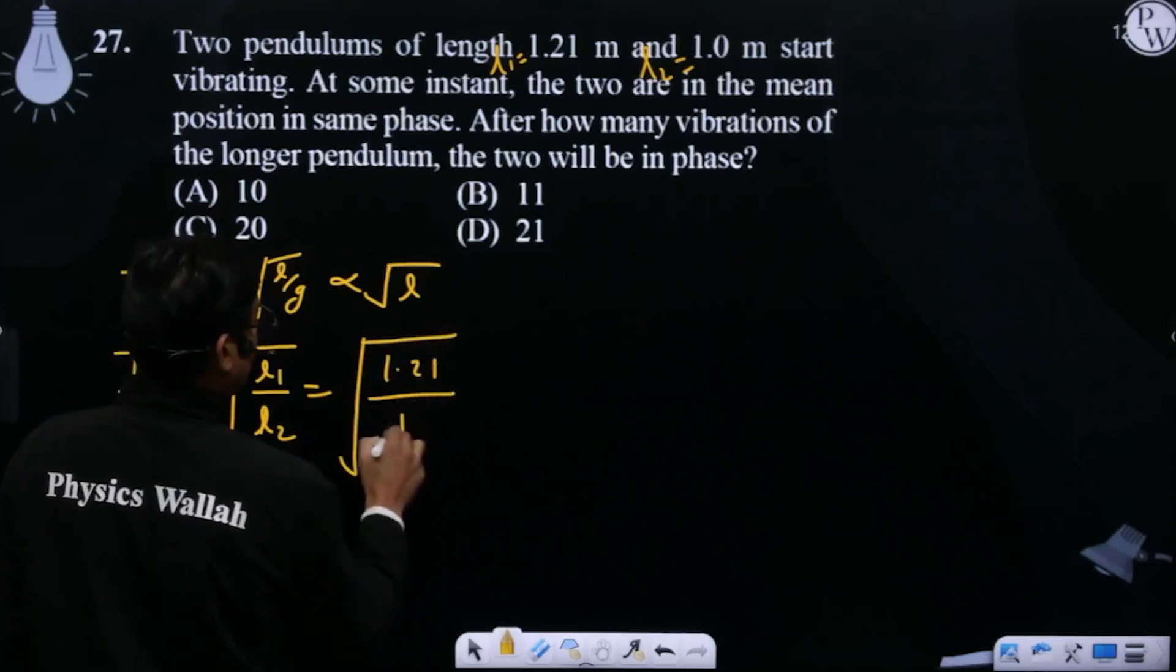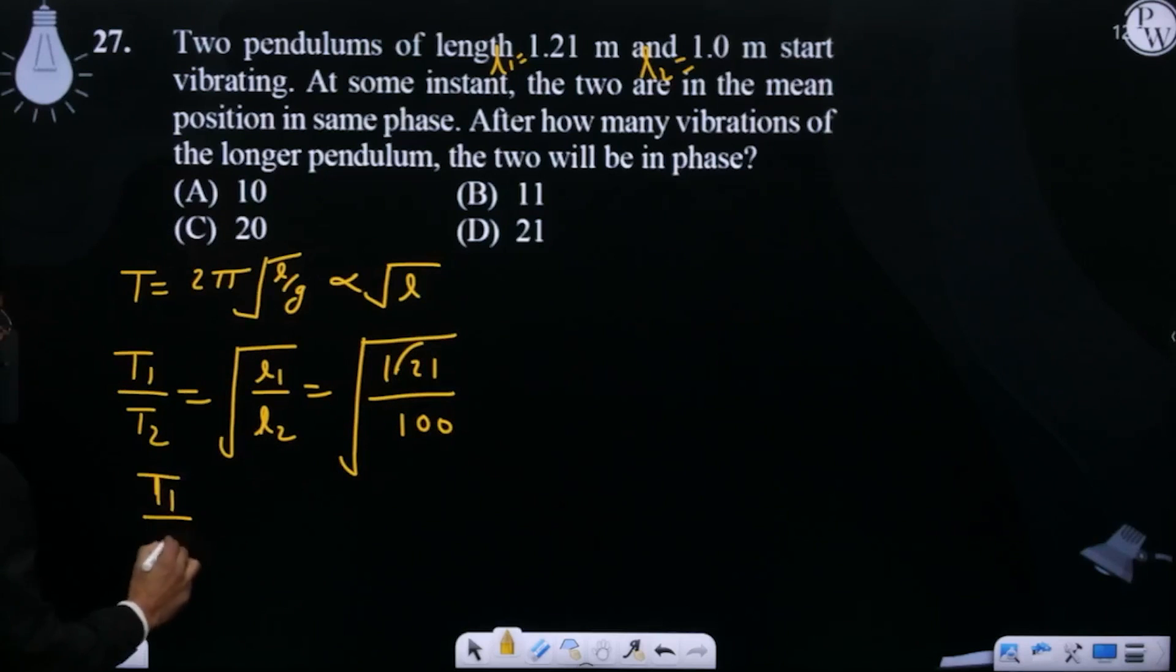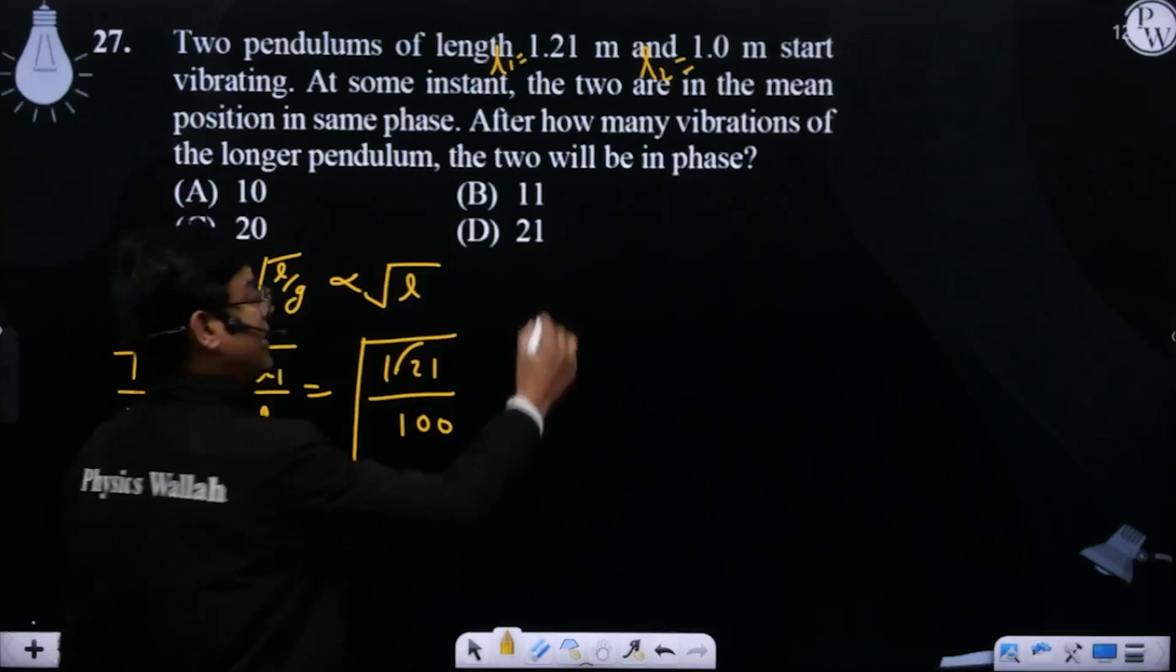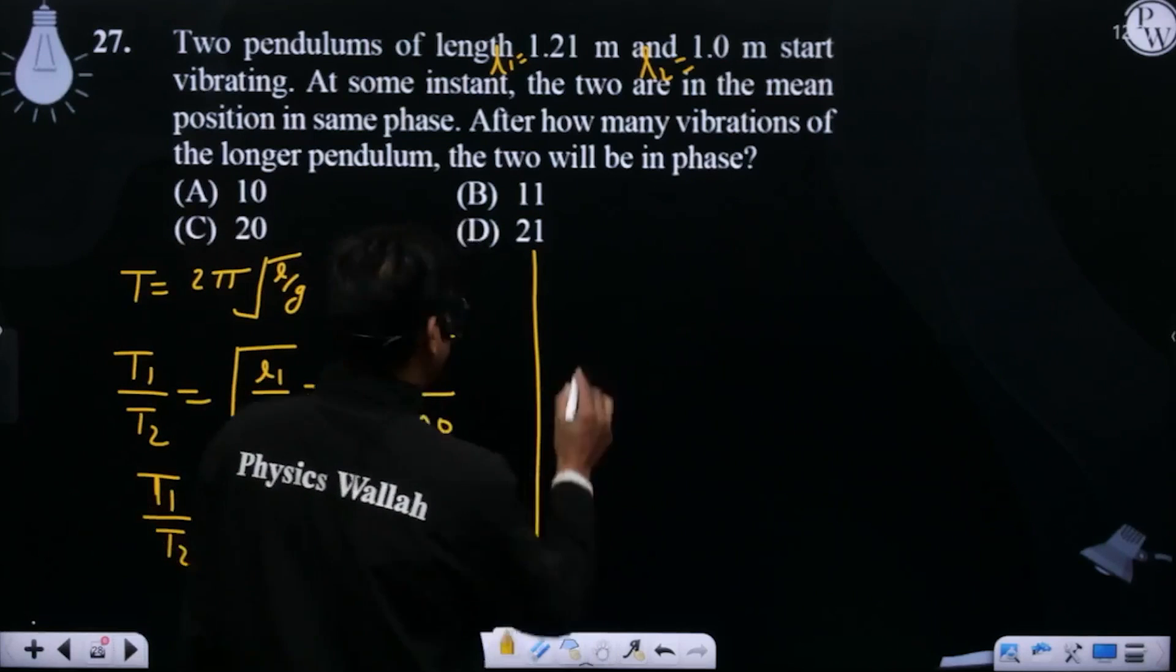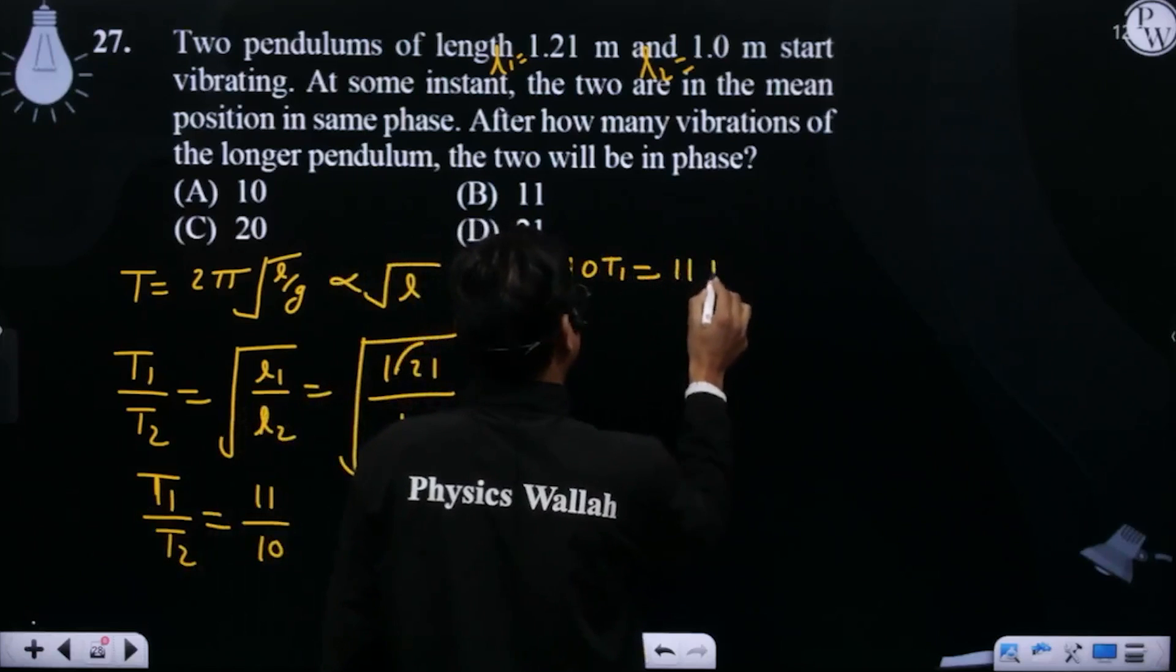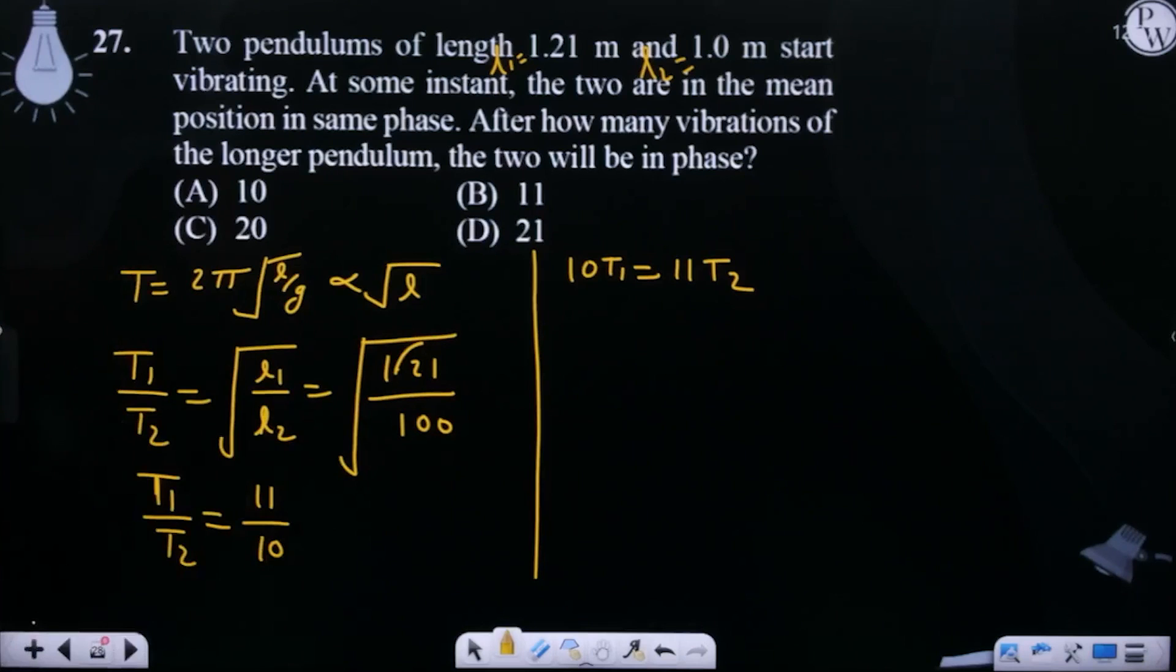So T1/T2 equals √(1.21/1.0), which gives 11/10. After how many vibrations of the longer pendulum will the two be in phase?